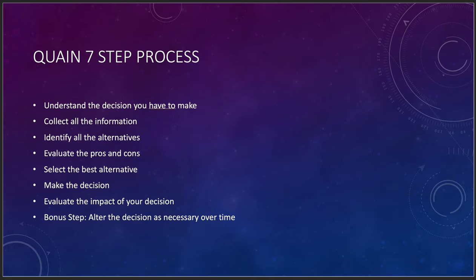There's also a bonus eighth step: alter your decision as necessary over time. This is something that often doesn't get talked about — going back and evaluating whether your decision was good, bad, or ugly. You will make good decisions, bad decisions, and really horrendous decisions. The question is how you recover and turn them into good ones. Maybe the water product wasn't quite right — maybe you needed to sponsor local events, or your marketing wasn't complete.